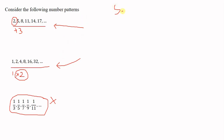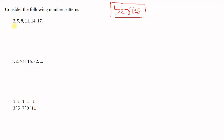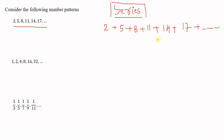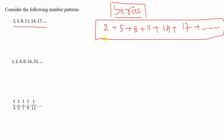Now we will move to something called series. What is a series? A series comes from a sequence. For example, the sequence 2, 5, 8, 11, 14, 17, etc. — if you sum all its terms, you get 2 plus 5 plus 8 plus 11 plus 14 plus 17 plus etc. This sum is infinite because the sequence has infinite terms, so we call it an infinite series. Since it comes from an arithmetic sequence, it is called an arithmetic series.